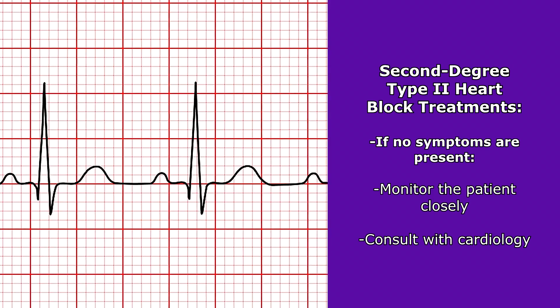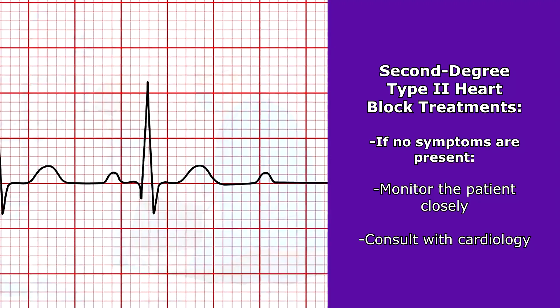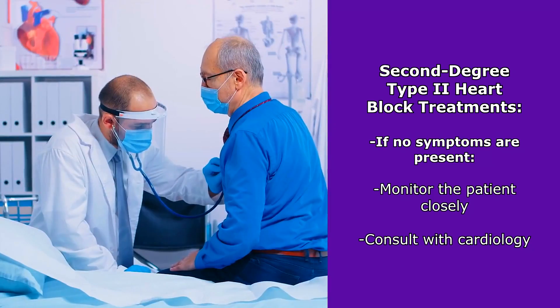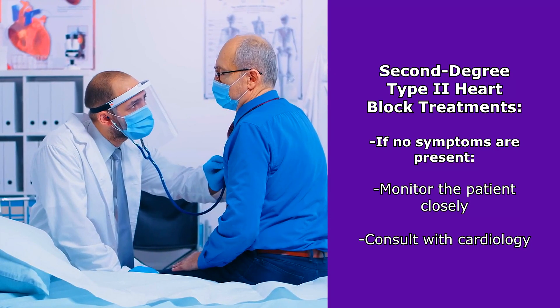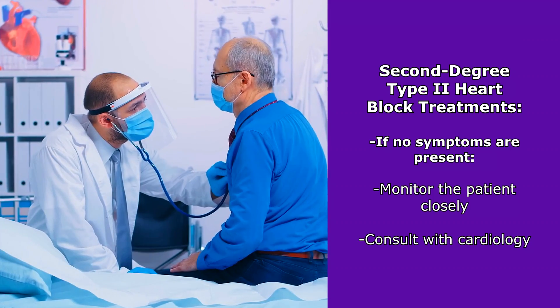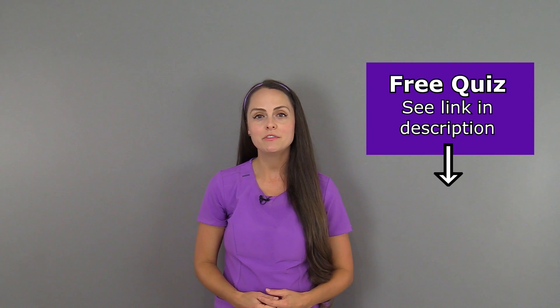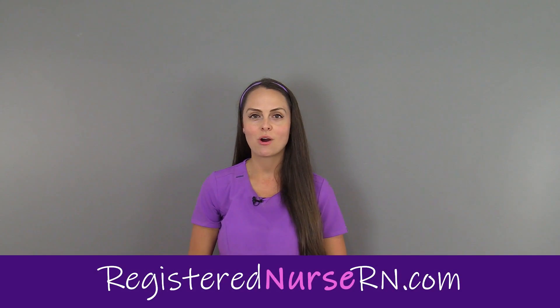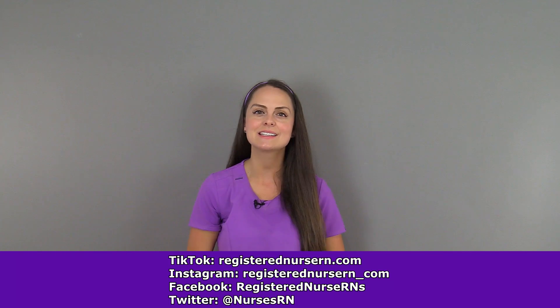Sometimes patients have this rhythm but the ventricular rate is still able to maintain cardiac output, so they don't really have symptoms. In that case, we would monitor them closely and consult with cardiology for further evaluation, which may include stopping certain medications to help with AV conduction. That wraps up this review on second-degree type 2 heart blocks — if you'd like to watch more videos on other heart blocks, you can access the link in the YouTube description below.